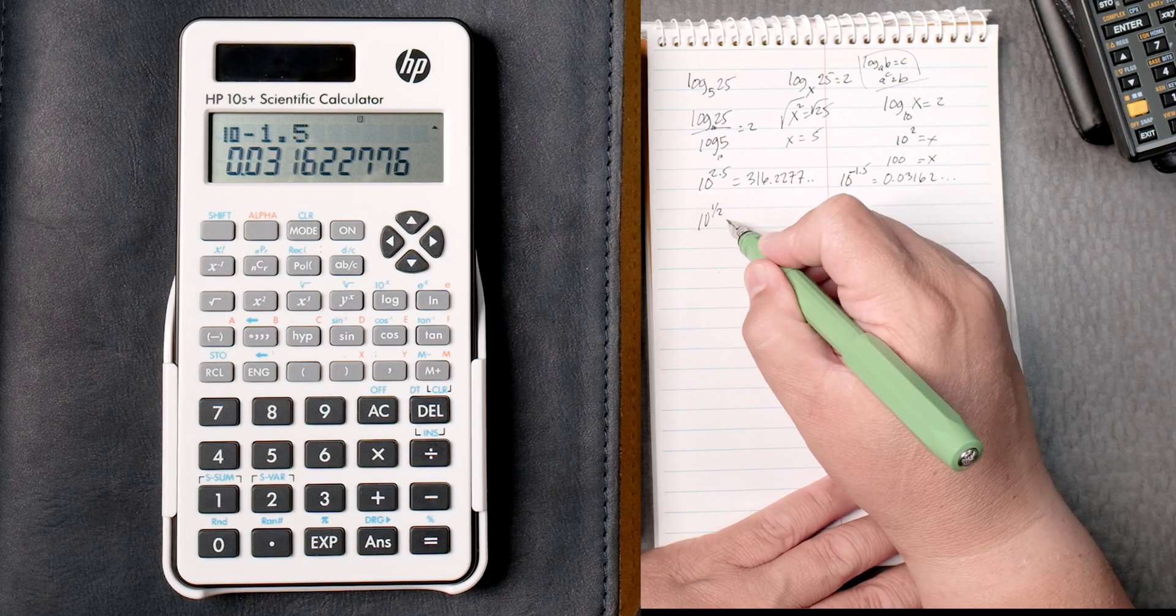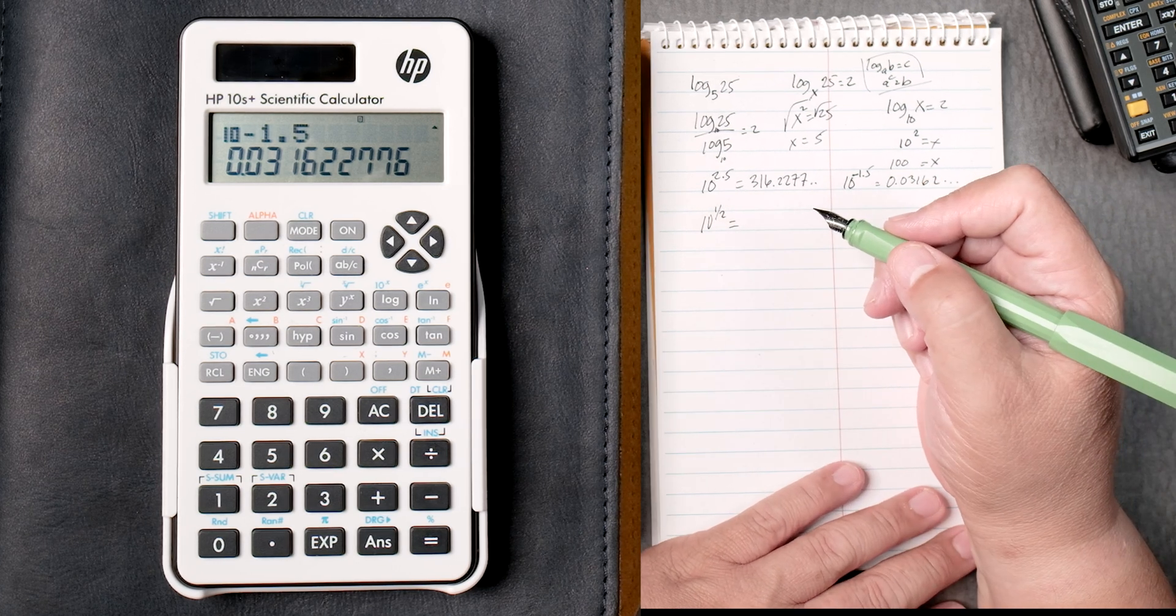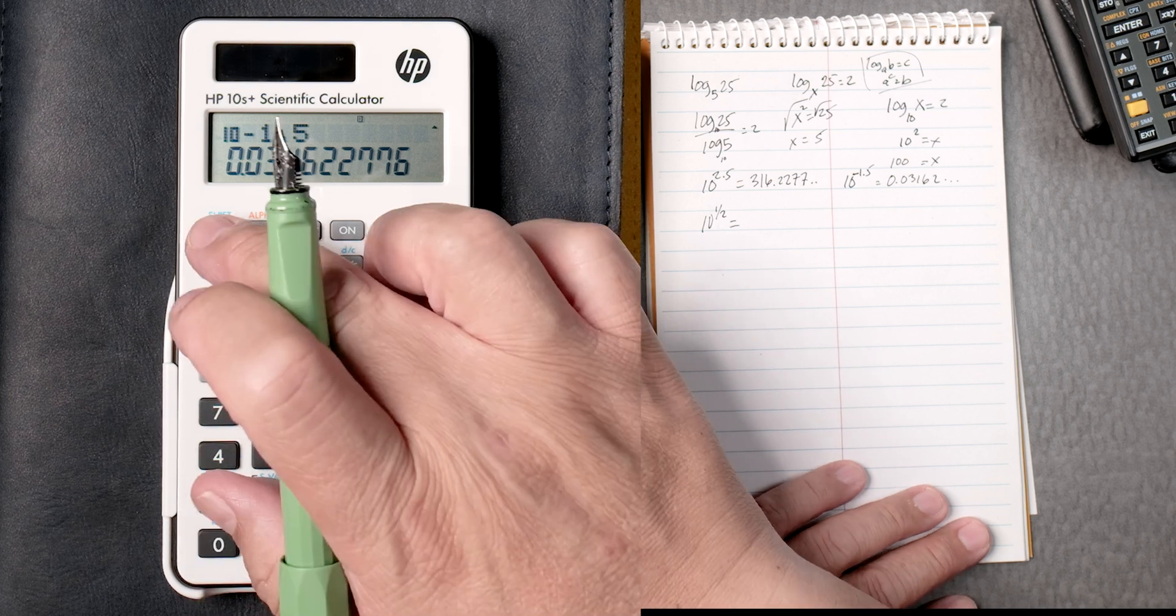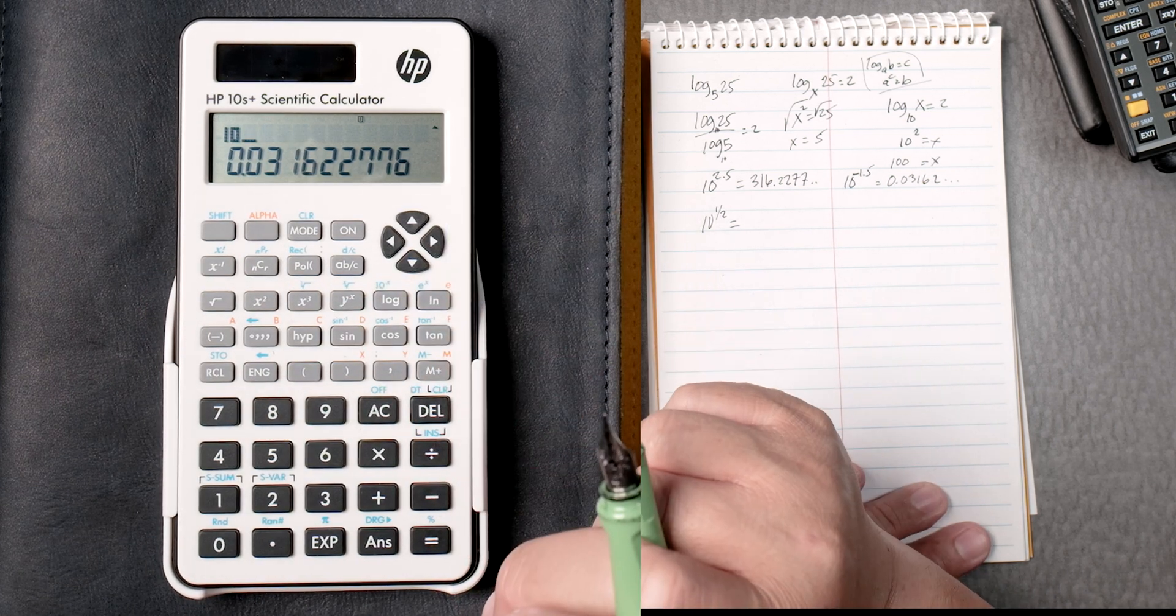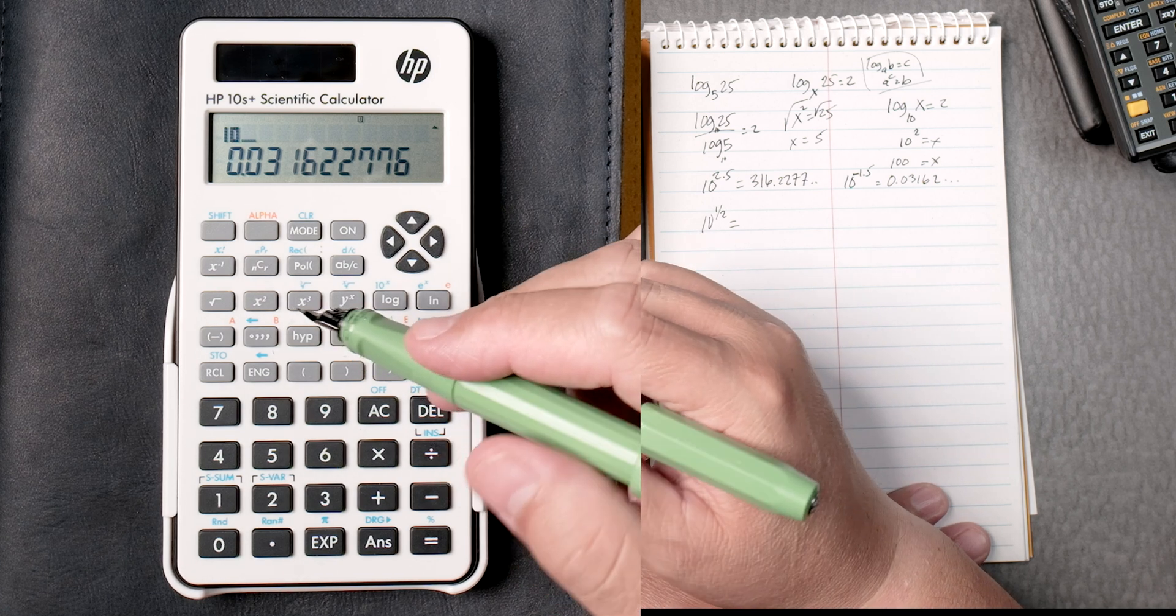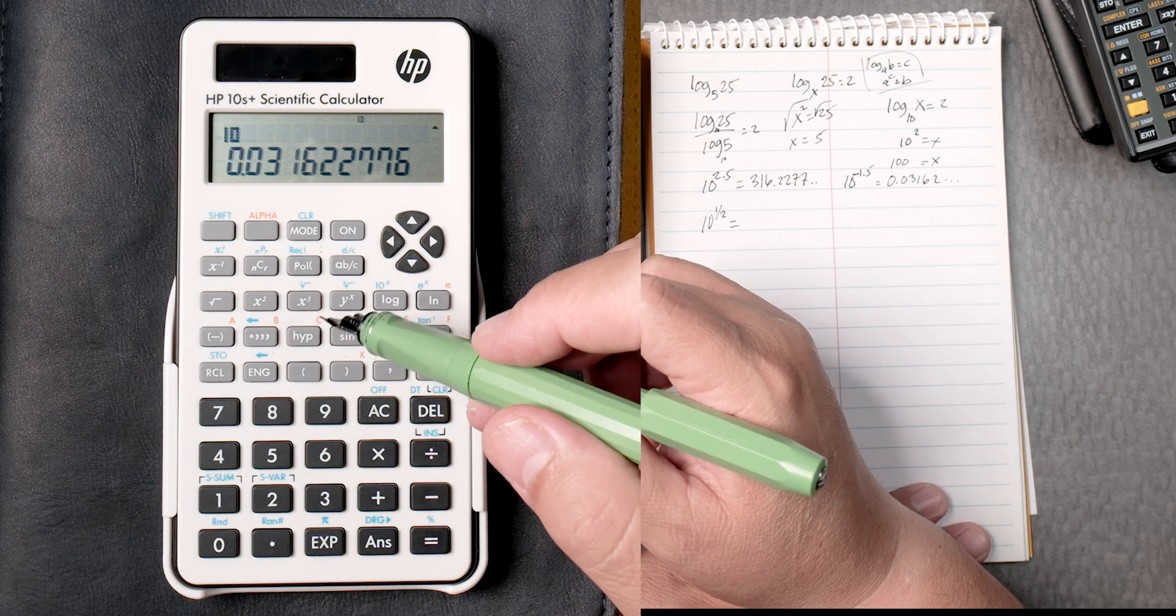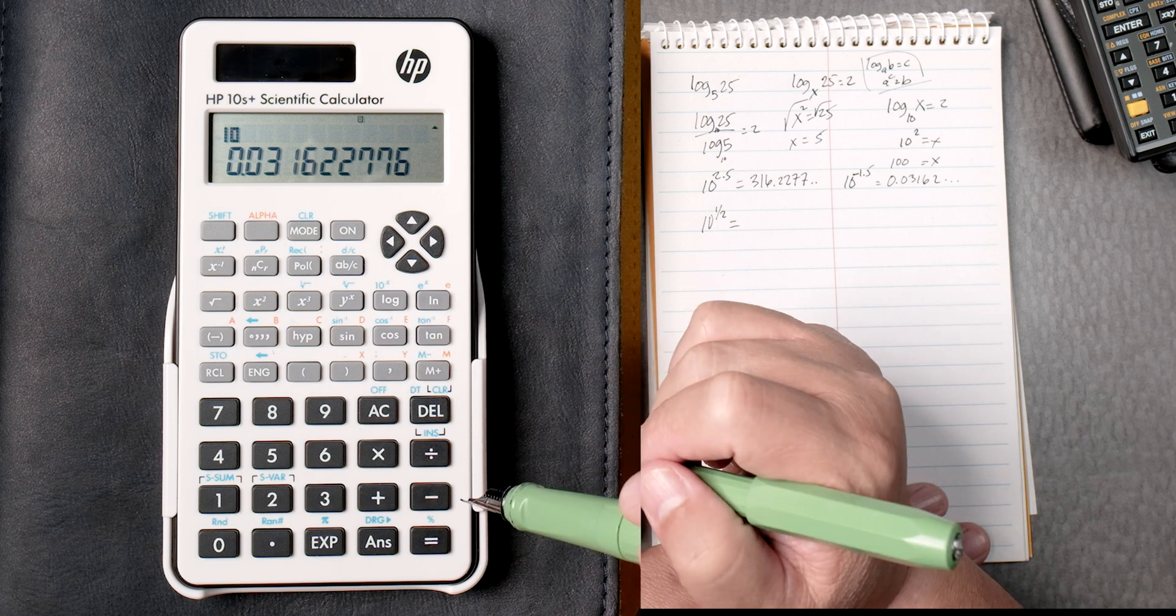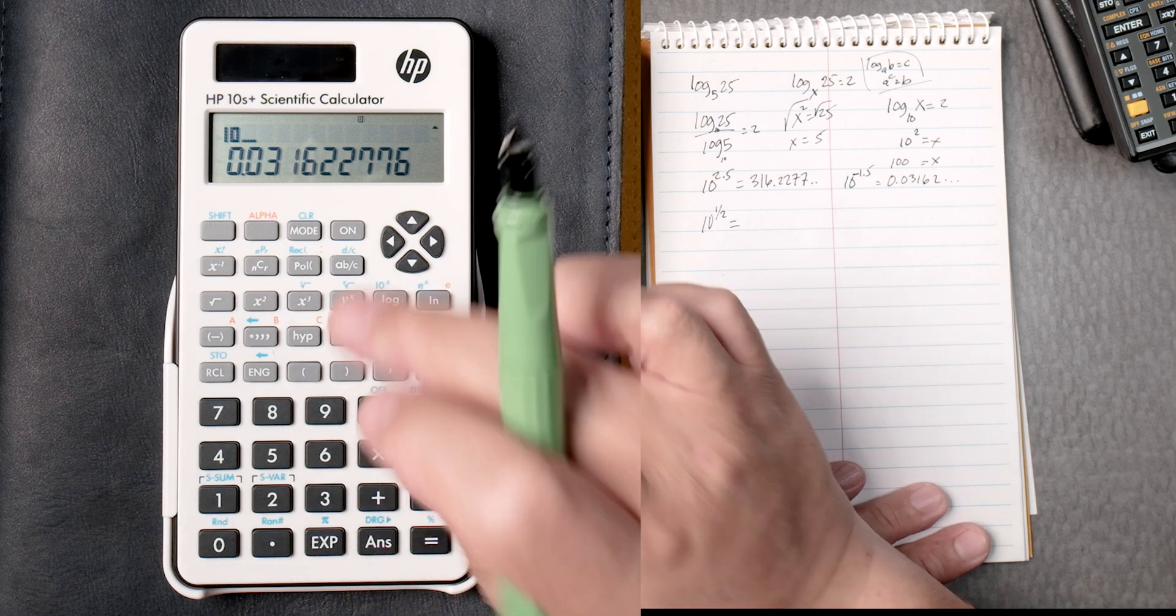10 to the 1.5. Same thing. Shift. 10 to the x. And I'm seeing if there is an ABC key. I don't see one, I don't think. Yeah, it's right here. It's right here.